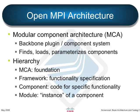There is a hierarchy to it. The MCA is kind of the foundation — it's the backbone. Below that, we have frameworks, where we have functionality specifications. A framework would be what kind of resource scheduler are you using, or what kind of network are you using, and a variety of things like that. And then components are code for specific functionality within a framework. Think of that as a plug-in.